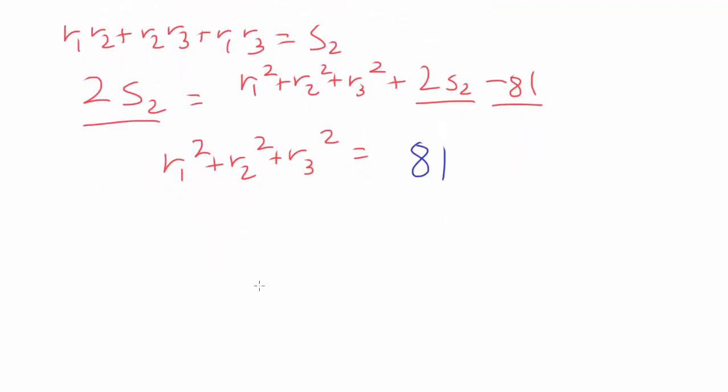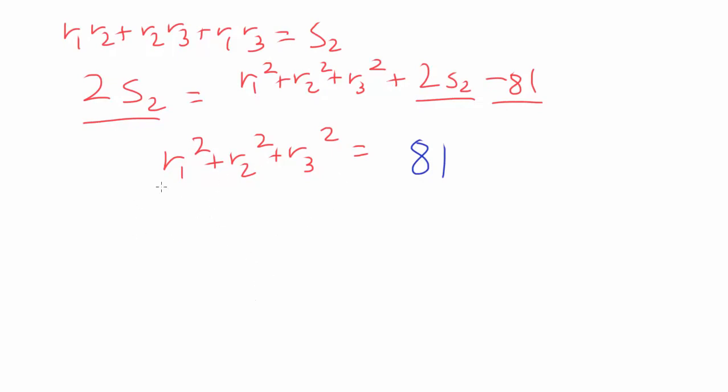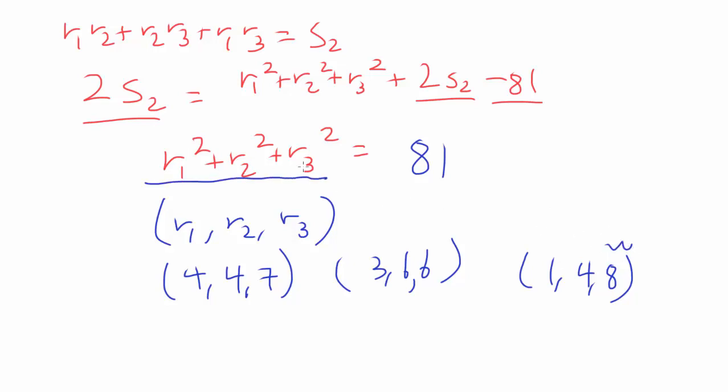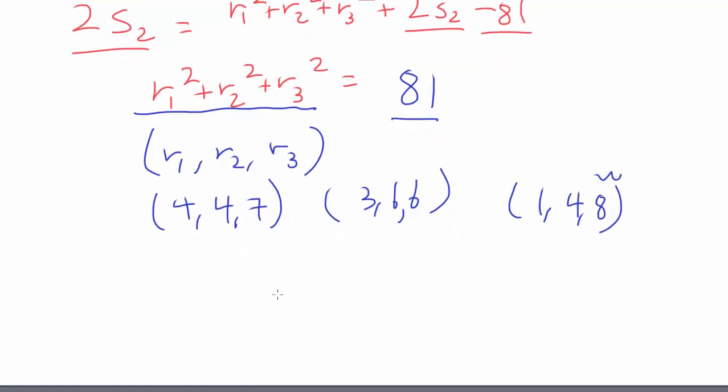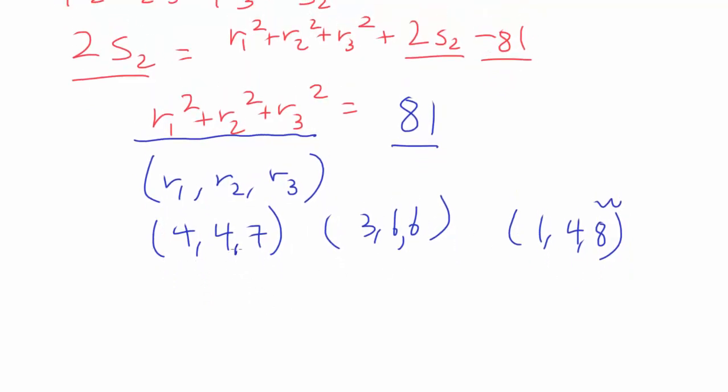Since r₁, r₂, and r₃ are positive integers, there are only a limited amount of subsets of the positive integers that's going to make this work out. After some trial and error, you're going to find r₁, r₂, r₃ can be of the form 4, 4, 7, or 3, 6, 6, or 1, 4, 8. There's going to be nothing greater than 1, 4, 8. Once one of the roots becomes 9, there's no way we are going to have positive integers, because 9² is already 81.